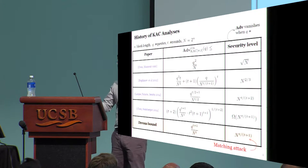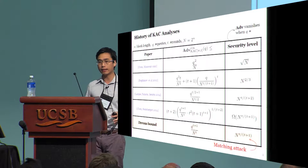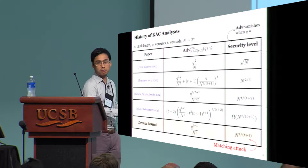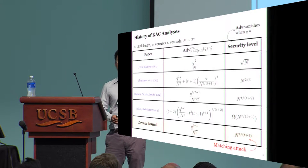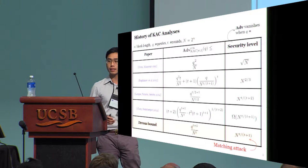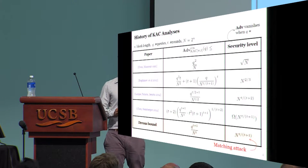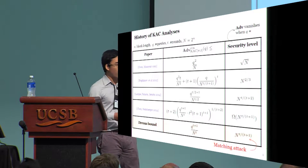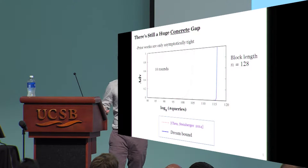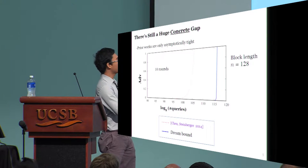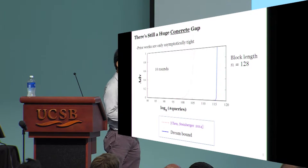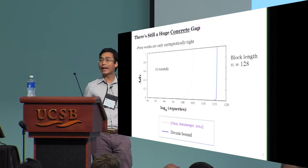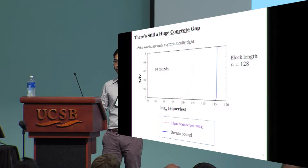There have been quite a lot of papers dedicated to analyzing the security of KAC. This line of work culminates in a paper by Chen and Steinberger that achieves an asymptotically tight bound for KAC. At first glance, the problem appears completely solved. However, if you look more closely, you realize a huge concrete gap between what is proven secure and the best known attacks. This gap is visualized here for the parameters of AES, meaning there are 10 rounds and the block length is 128.